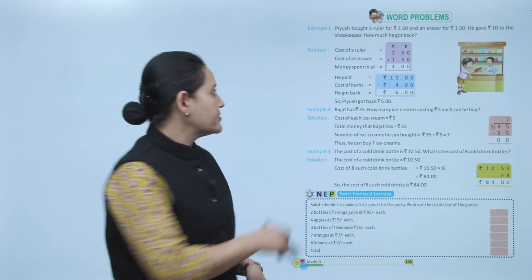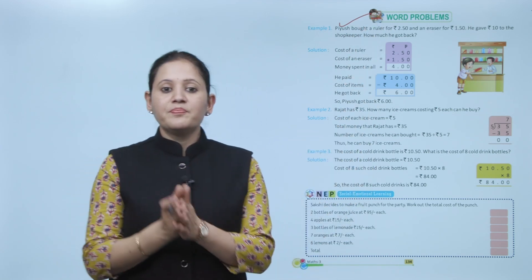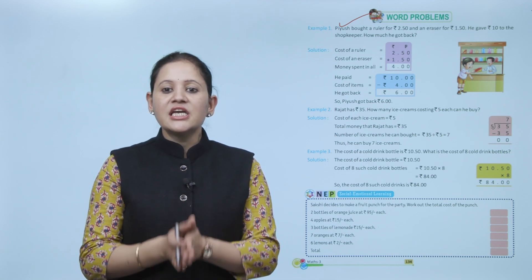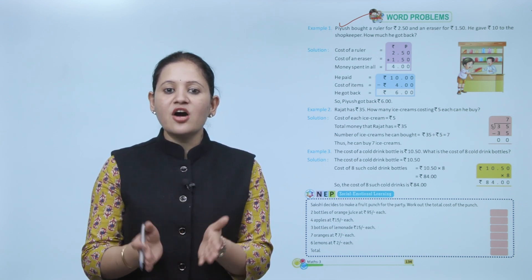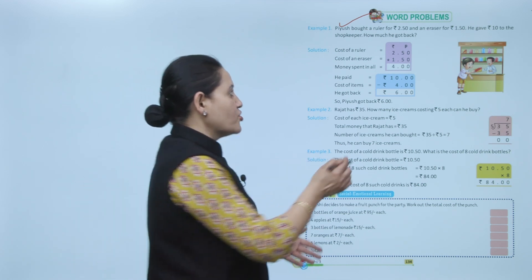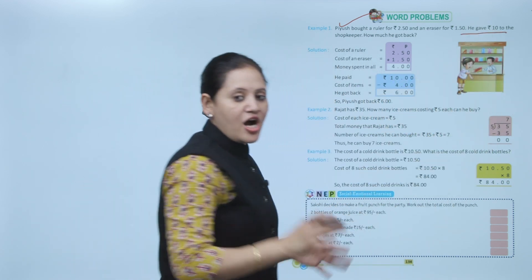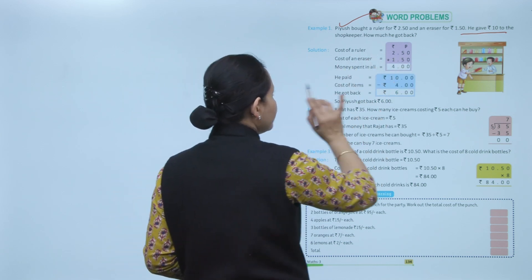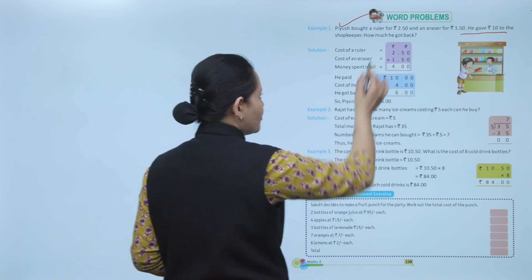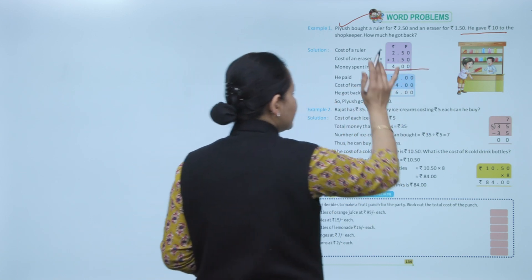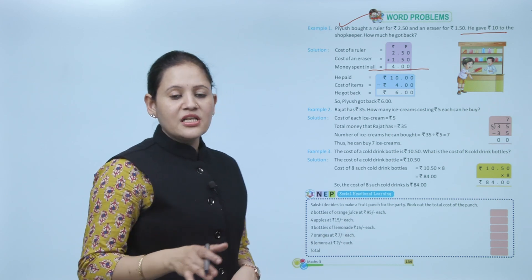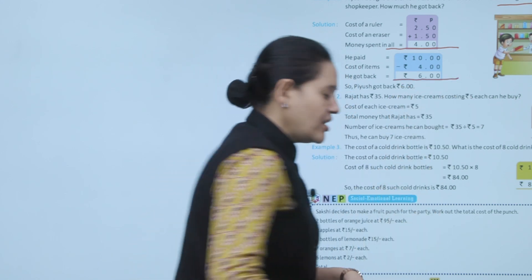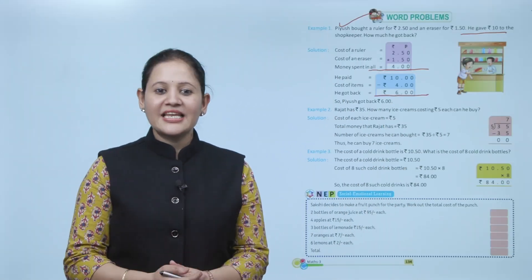Next is word problems. Piyush bought a ruler for rupees 2.50 and an eraser for rupees 1.50. He gave a 10 rupee note to the shopkeeper. How much money did he get back? Cost of ruler 2.50 plus cost of eraser 1.50 equals total spent rupees 4. Money got back: 10 minus 4 equals 6 rupees.